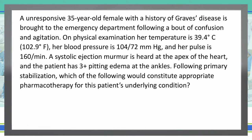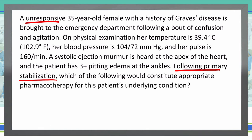So following primary stabilization, which of the following would constitute appropriate pharmacotherapy for this patient's underlying condition? The first thing to note here is that they're not asking the first steps — primary stabilization is that first step, which is airway, breathing, circulation — your ABCs. They've already checked airway, breathing, circulation because this is an unresponsive 35-year-old female, so that unresponsive status needs to be addressed right from the bat.